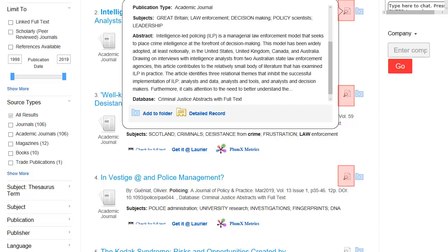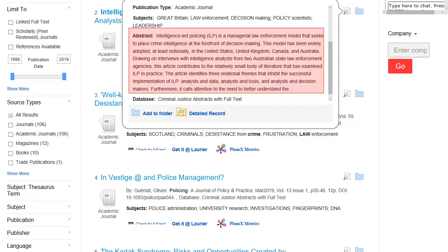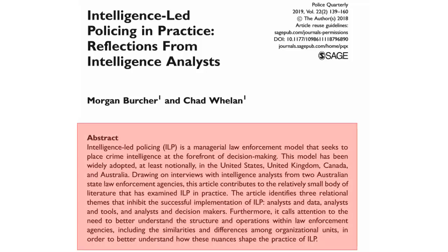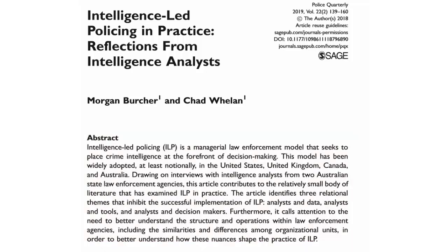In EBSCOhost, click on the magnifying glass icon next to an article in your search results. A window pops up, and you can scroll to see the abstract of the article there. If the search databases don't give you an abstract, you can find it in the article itself — scholarly articles always start with the abstract right at the beginning. Using abstracts as an evaluation tool can save you a lot of reading time.